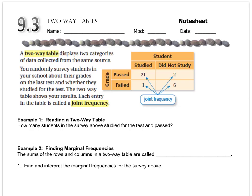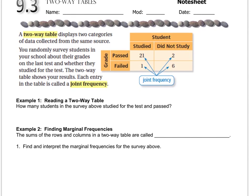Each number in the table is called a joint frequency. So, how many students in the table above studied for the test and passed? You're looking for the intersection of where 'studied' and 'passed' intersect. Studied and passed intersect at 21.